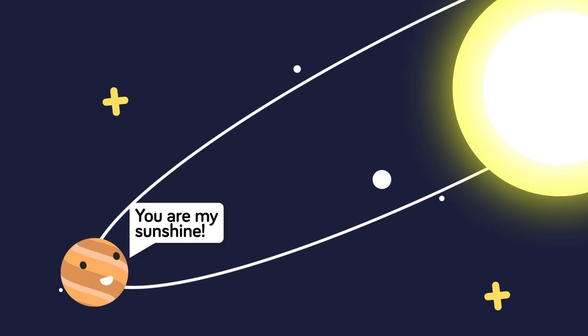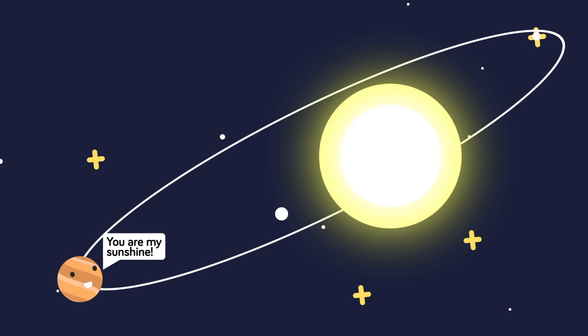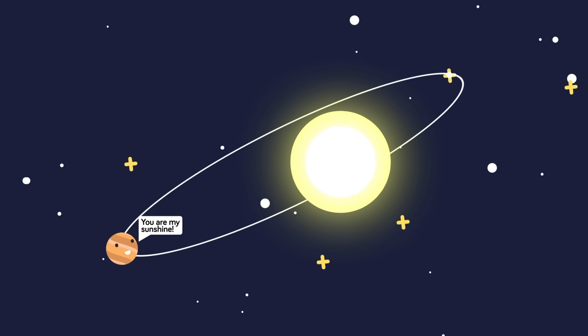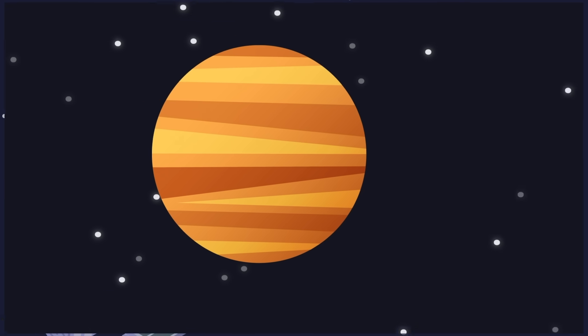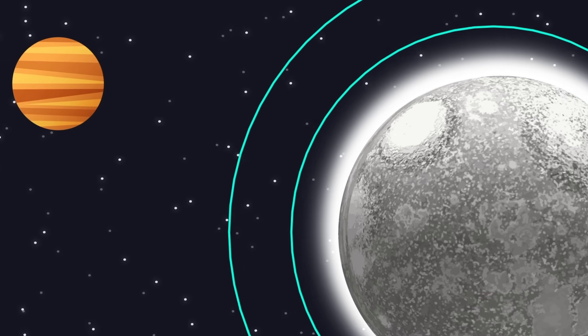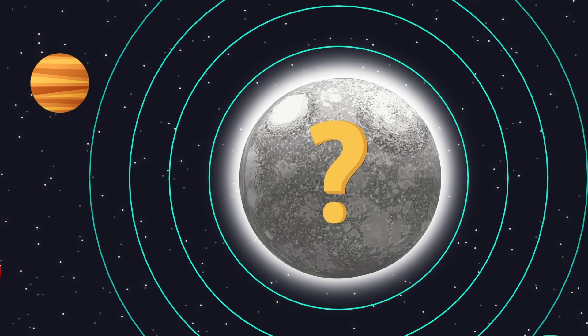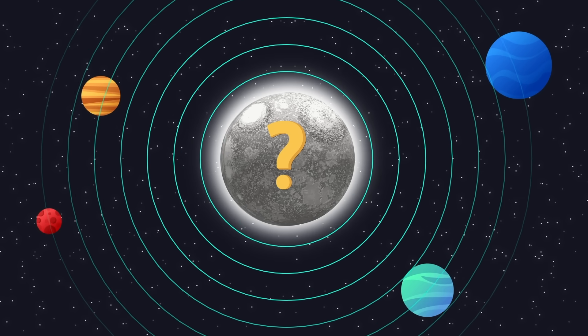When only the gravitational influence of the outer planets is taken into account, it fails to model the observed shifting of the perihelion of some of these objects. The evidence is in. Something we failed to account for is having an effect on some of the most distant objects in our solar system.